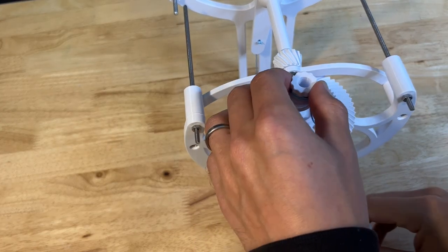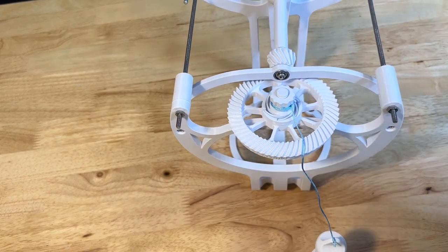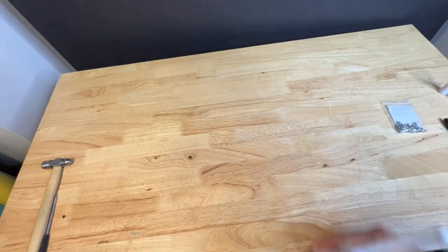Now pop the spool onto the post on the big gear. Use a C-clamp to secure everything. And we're ready to go to the wall.